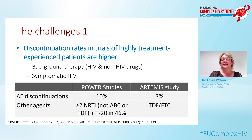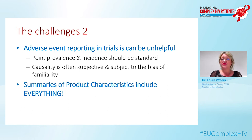The second set of challenges: adverse event reporting in trials can be unhelpful. Simply listing the proportion of people who get a side effect over a one-year period is much less helpful than looking at point prevalence and the incidence of new-onset side effects over time, which I really think should be standard for all trials.